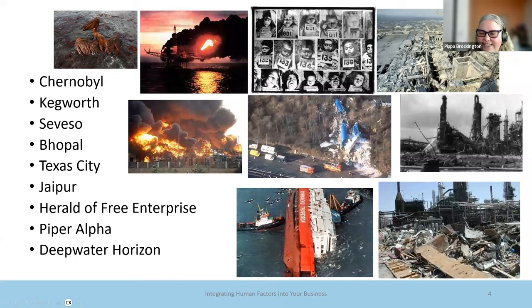We've got Texas City where the operatives overfilled a raffinate splitter column. It was supposed to be filled to nine feet and they filled it to well over 90 and then overfilled the pipework and the stack as well. We've got Jaipur, that big fire where they failed to put a blind in properly and ended up losing the containment of an entire storage sphere of petrol. Herald of Free Enterprise where they left the doors open. Piper Alpha, again following maintenance, lack of proper handover of a permit to work, poor communications. The fire suppression system was left switched off after a diving exercise. There were so many things that went wrong in Piper Alpha that I can't do it justice.